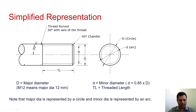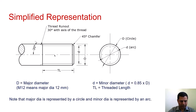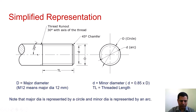This is the simplified representation for the external thread. This is the front view and this is the side view. In the side view, we show two circles — the outer circle is a full circle whereas the inside one is an arc. In the front view, the outer thick line represents the major diameter and the thin line represents the minor diameter. We make a 45-degree chamfer at the end of the screw or bolt so that it easily enters the nut or threaded hole. In the simplified representation we also draw a small line making an angle of 30 degrees with the axis of the bolt.